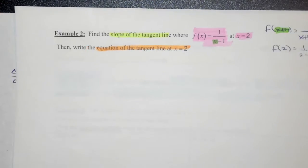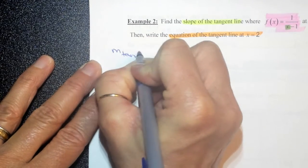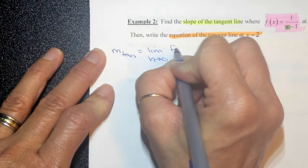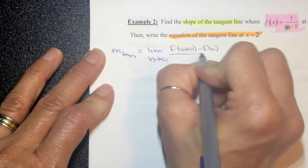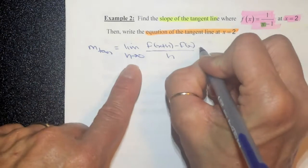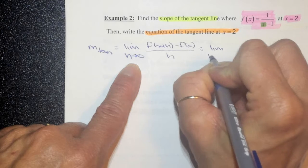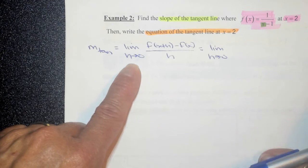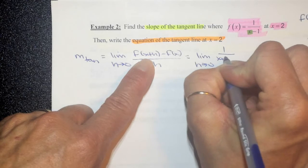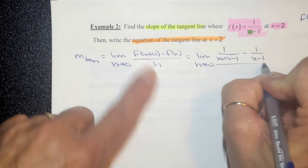Now I have everything I need to find the slope of the tangent line. This is the limit as h approaches 0 of f of x plus h minus f of x, all over h. You need to know this formula — it will not be given to you. Plugging in our pieces: the limit as h approaches 0 of 1 over x plus h minus 1, minus 1 over x minus 1, all over h.